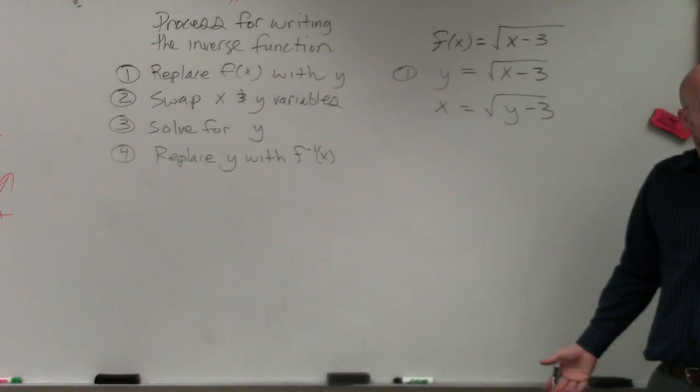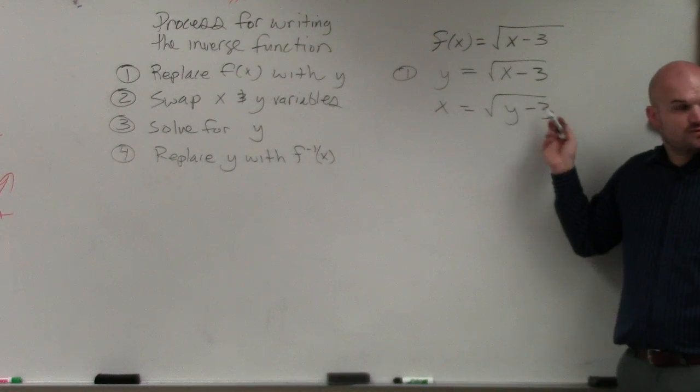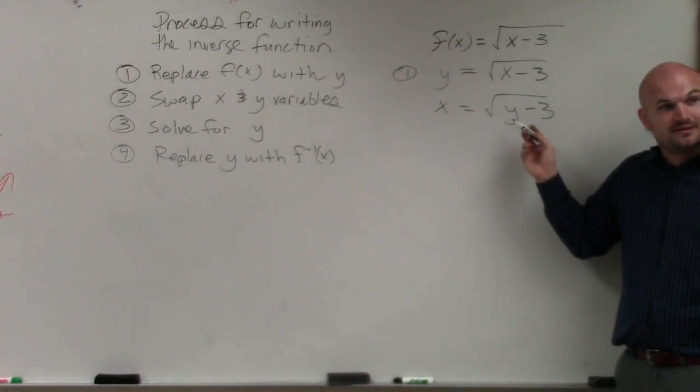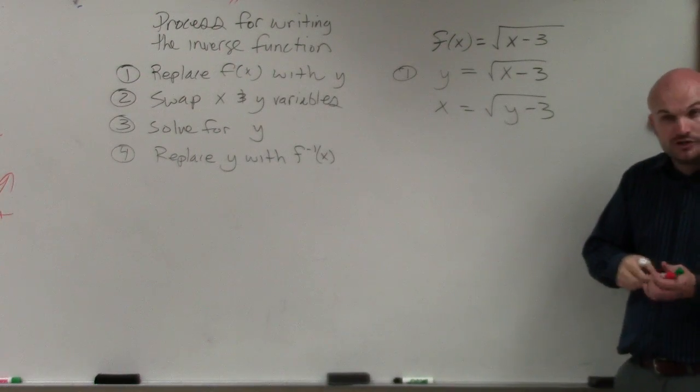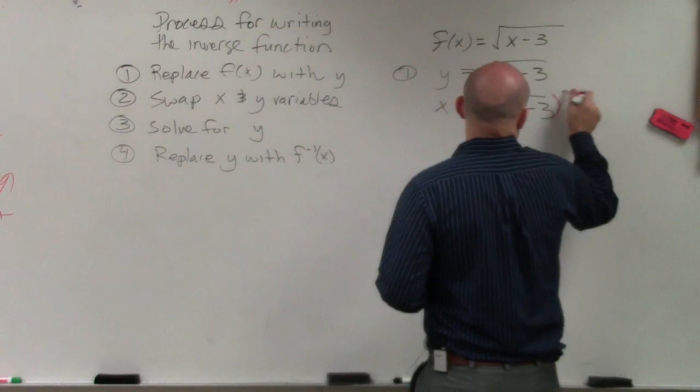Now step number three, solve for y. So you see my y is being subtracted by 3, and it's under the square root. So I have to undo the square root by squaring both sides.